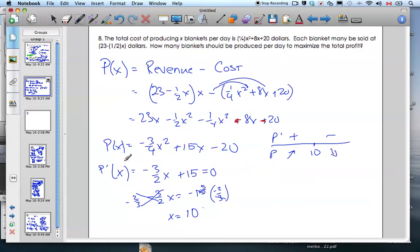The other way I could check it is by taking the second derivative. The second derivative equals negative three-halves. That means the function P(X) is always concave down, because the second derivative P double prime is negative. Since it's concave down, that point is a maximum.